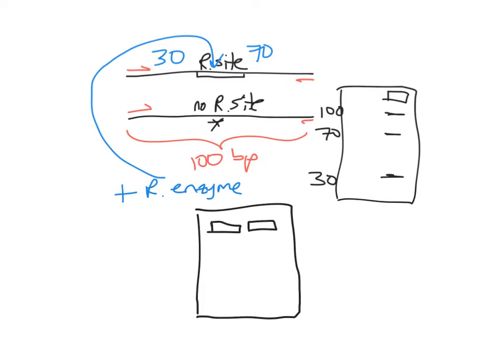If we ran out minus enzyme and plus enzyme, with restriction digest, and had a molecular weight ladder that was 500, 400, 300, 200, 100 - if without digest there's a 400 base pair fragment, and with digest you see 400 and 300, then can you tell me what other band you should see in the right-hand lane? It would be 100.